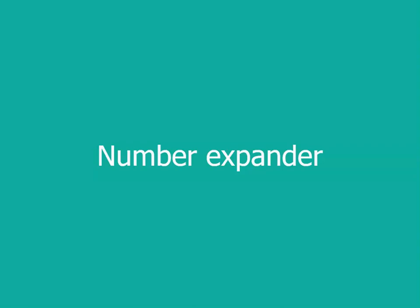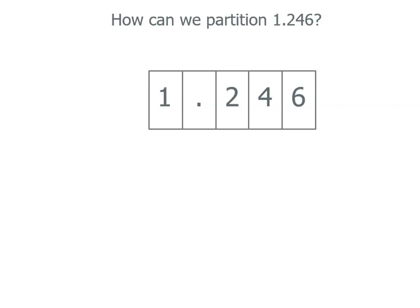Now we've got a number expander this time, and I've got 1.246. Now this is the same as we do with whole numbers, except we're expanding to the right of the decimal point for our decimals. And the value of those digits is lower.